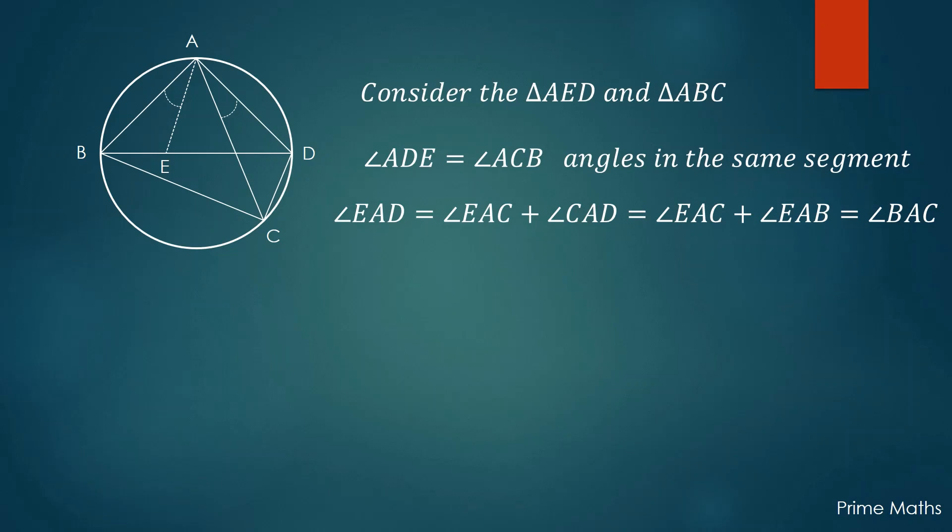Since the triangles AED and ABC are similar, their corresponding sides are proportional, which we write as equation 2, as before.